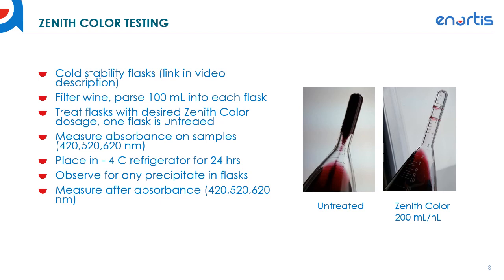You'll have your initial absorbance on the samples, then those flasks go into a negative four degree Celsius refrigerator for 24 hours. After 24 hours, take the flasks out and observe for any precipitate — you can record the amount. Generally the untreated sample may have precipitate from color or tartrates while the treated sample will have less, if any, sediment. Then measure absorbance again to see any color difference between the initial and final readings. This testing predicts the instability of color over time and tells you if your wine has the potential to drop unstable color, and whether the Zenith Color dosage you've selected has stabilized the wine.